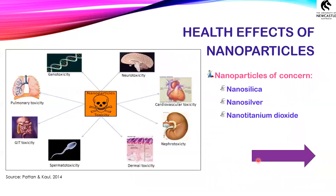Now let us look at the health effects. Health effects of nanoparticles is a huge area and lots of research is focused around it. The effects are mainly studied on lungs, the genetic makeup, the nervous system — nerves, brain, spinal cord — the cardiovascular system including heart, blood vessels, and blood, the kidneys, skin, reproductive system — specifically the male reproductive system, as nanomaterials are found to be highly toxic to sperms and can affect sperm morphology — and of course the gastrointestinal tract. As today's topic is focused on nanomaterials released from construction activities, I'm going to restrict myself to the three main nanomaterials found to be released during such activities: nano silica, nano silver, and nano titanium dioxide.